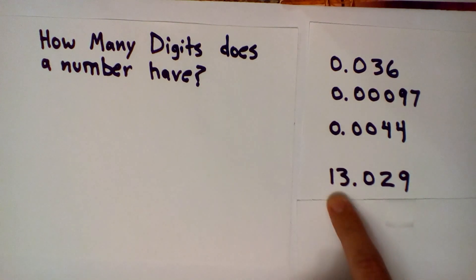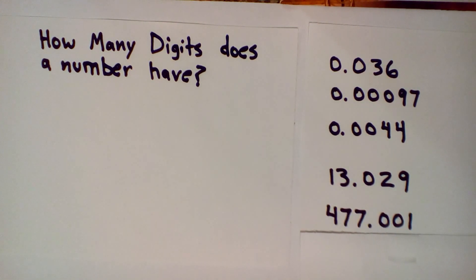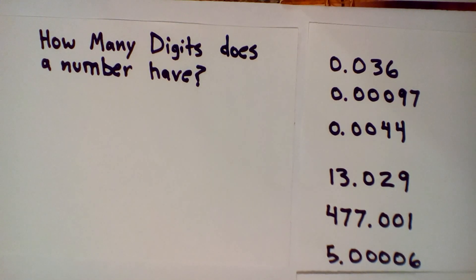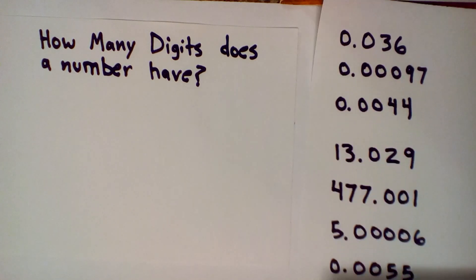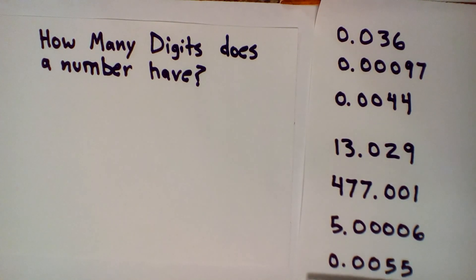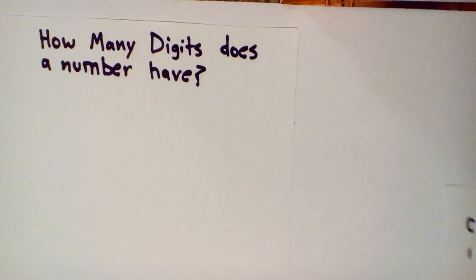For a number like this, I only care about the one and the three, so this number has two digits. Three digits, one digit, minus two digits. Minus two digits. And zero point zero zero five five.